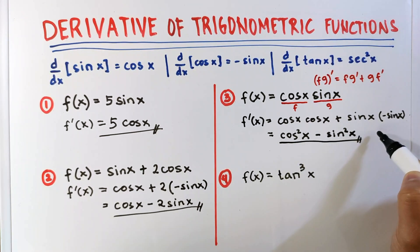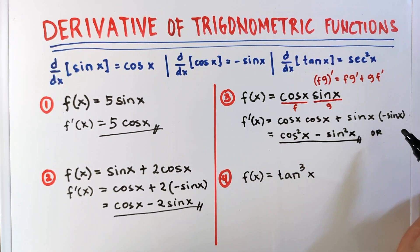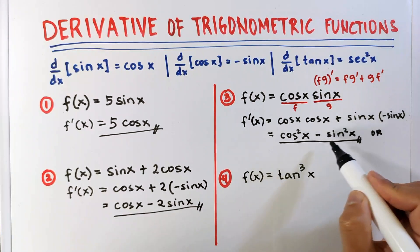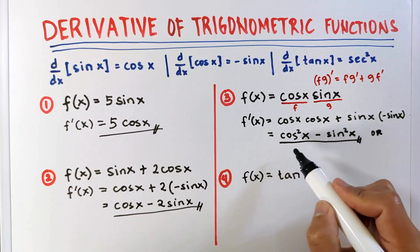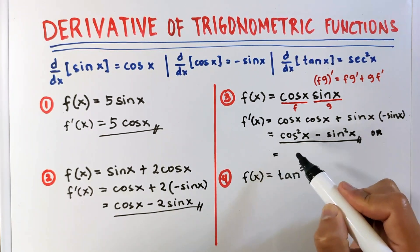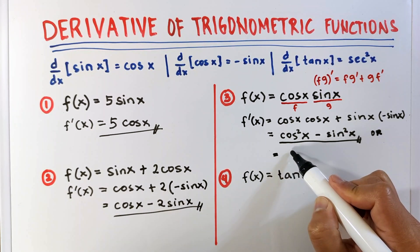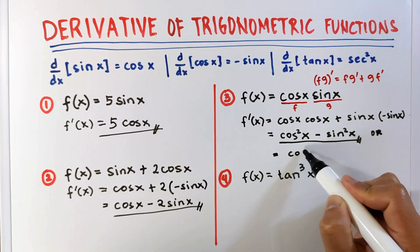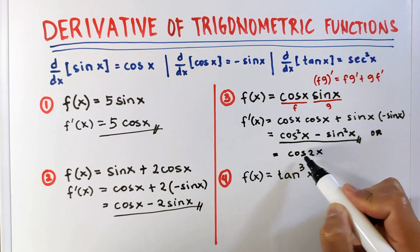We can also use the double angle identity for cosine. This is also equal to cosine 2x.